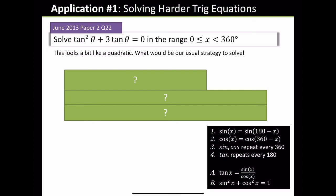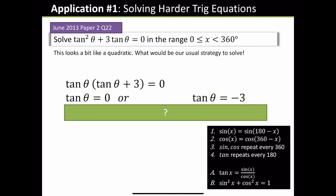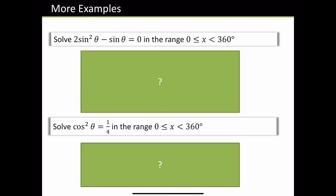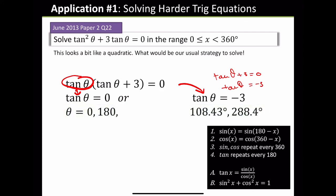Solve tan²θ plus 3 tan θ equals 0 in the range of 0 to 360. It looks like a quadratic. Your strategy should be to factorise. Factorise by tan θ: tan θ(tan θ + 3) equals 0. So tan θ must equal 0, or tan θ must equal minus 3. Because tan θ plus 3 equals 0 gives tan θ equals minus 3. So θ is 0 and 180, or 108.43 and 288.4. You've got four different solutions, and you write all four.